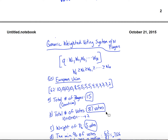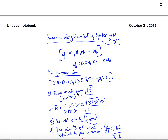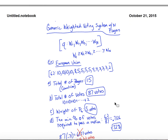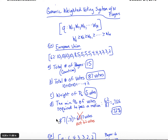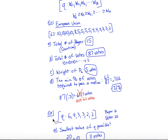Let's say we want to find the weight of player six: you count one, two, three, four, five, six — that player controls five votes. The quota is 62 out of 87 total votes. To find what percent is needed, take 62 divided by 87, which gives about 72% of the votes. If you do 87 times 0.71 you get 61.77 votes, but you actually need 62 because you can't have a fraction of a vote.